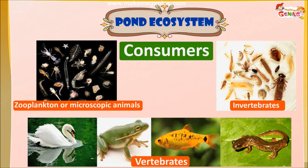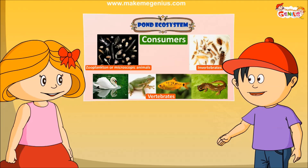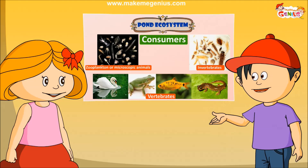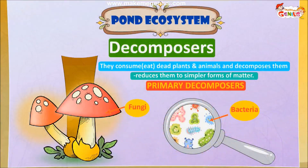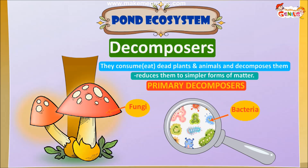What are zooplankton? They are microscopic animals that eat phytoplankton or small zooplankton. Zooplankton float about in the open water portions of the pond and are important food for some animals. Now, about decomposers — fungi and bacteria are the main decomposers. They eat dead plants and animals and decompose them so that they can be used by producers.